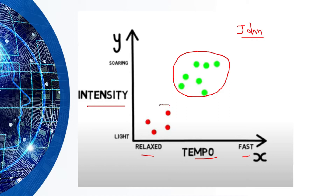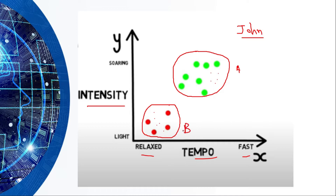The set of data points in the relaxed tempo and light intensity region represents songs John would not like. Any data point lying in the fast tempo and soaring intensity region — we can tell that John would definitely like that song. Any song lying in the relaxed tempo and light intensity region — John will not like it. Let's name the liked region as A and the disliked region as B.